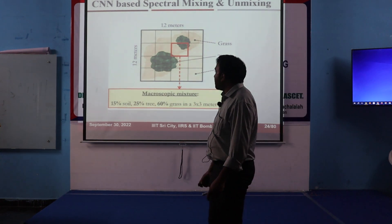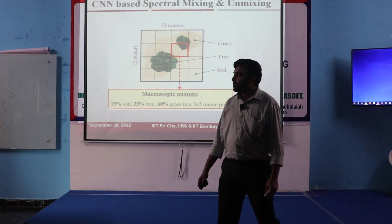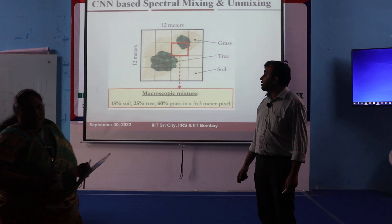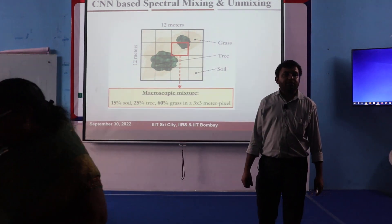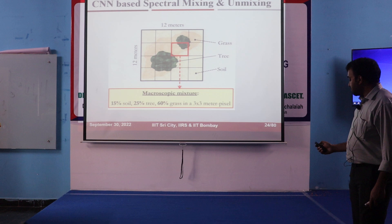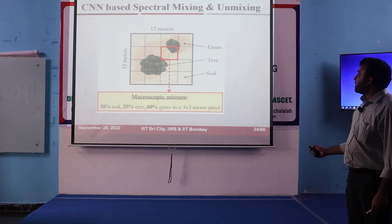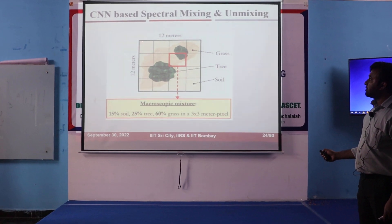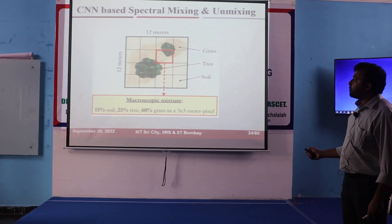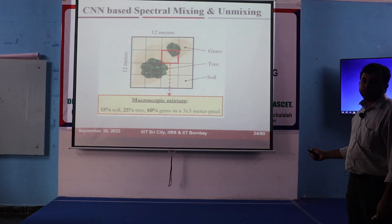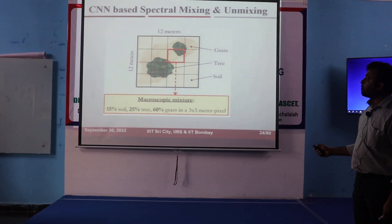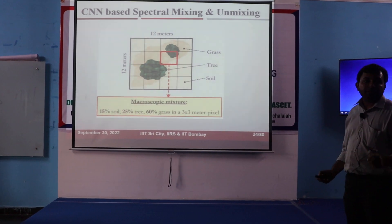So, because of that problem, what will happen is that when you have this, you can see here, this area — it corresponds to one pixel. This area is adding only soil. So that one pixel will be only soil.